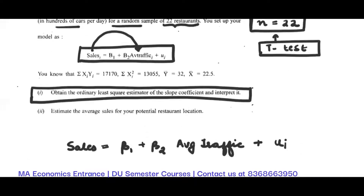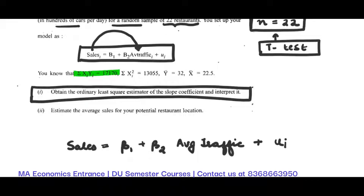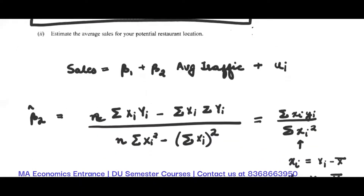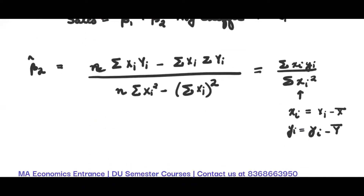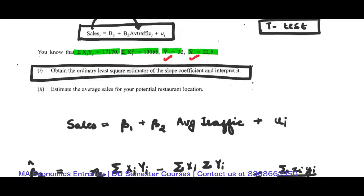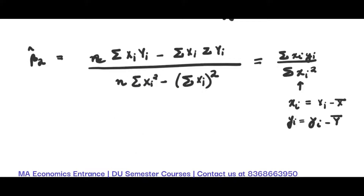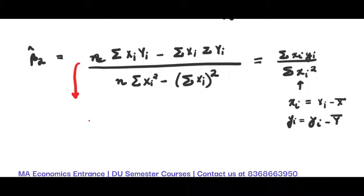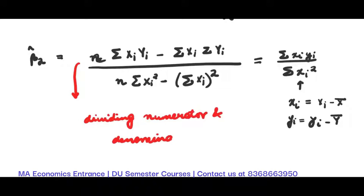We are already given Σxᵢyᵢ, Σxᵢ², x̄, and ȳ, so we can go ahead and use the formula. Because we are given the mean values, there are two ways to convert it. One way is to rewrite the formula by dividing both the numerator and denominator by n².